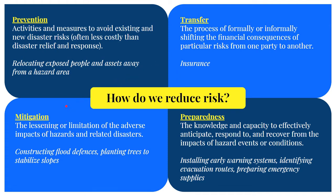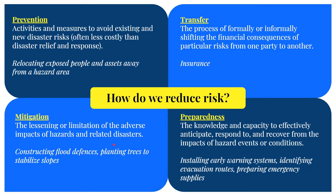Next is mitigation — the lessening or limitation of the adverse effects of hazards and related disasters. Examples include constructing flood defenses or planting trees to stabilize slopes and minimize damages from landslides. This is an important area for local government units to address, or if not possible, for the community or even individual families in their homes.